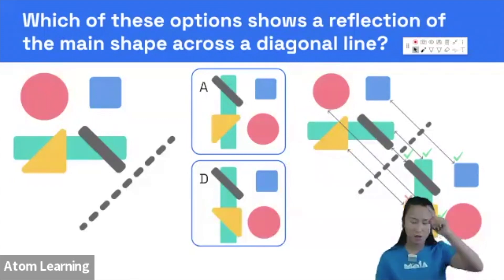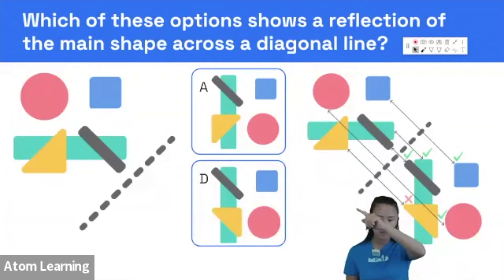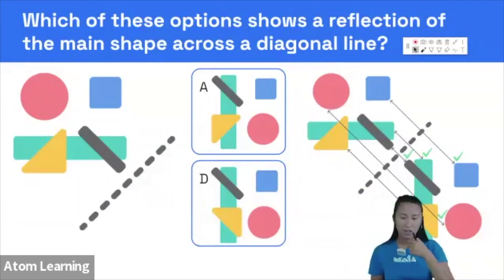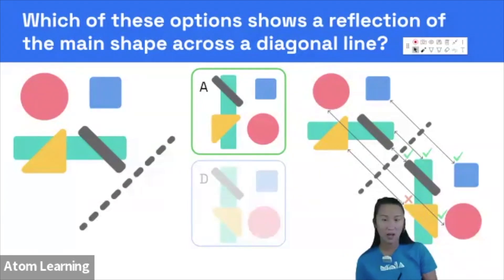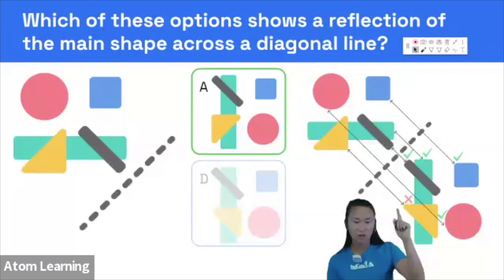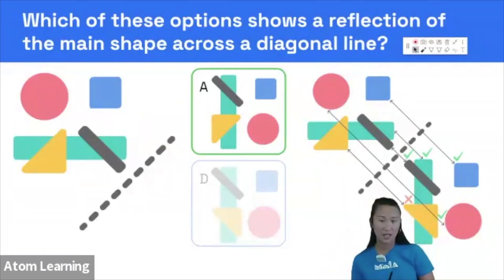We can see that we have our mirror line here. And what we've done is reflected every shape across this mirror line, duplicating the distances of each point across the line. That means that we can rule out answer option D because the triangle should not be facing this way. It should actually be like it is in A.